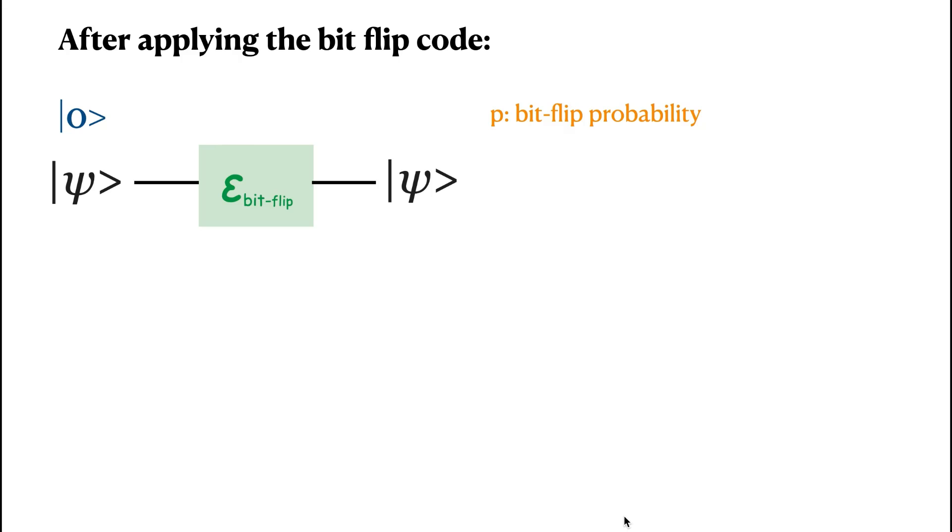So for example, here at the input, we have a qubit initialized by the 0 state. And after applying the bitflip code error correction, we got to lower the probability for the bitflip.